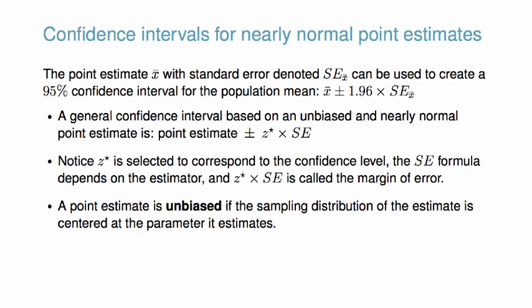Lastly, notice we assumed the point estimate is unbiased. A point estimate is unbiased if the sampling distribution is centered at the true parameter value which it estimates. In other words, an unbiased point estimate is, on average, correct.